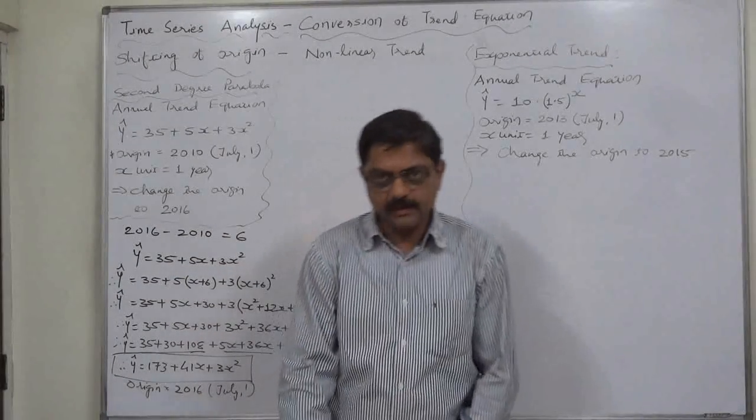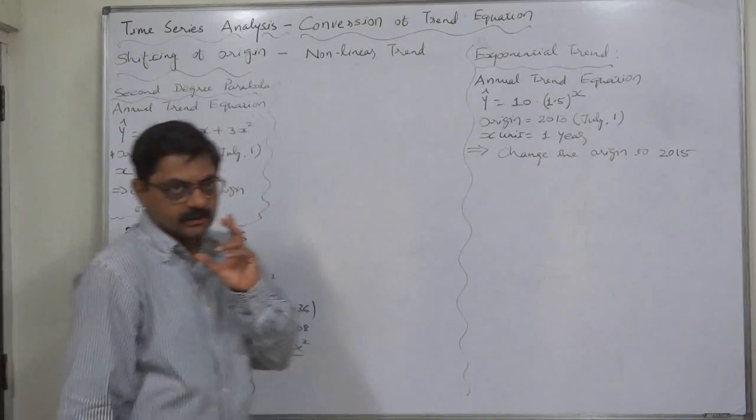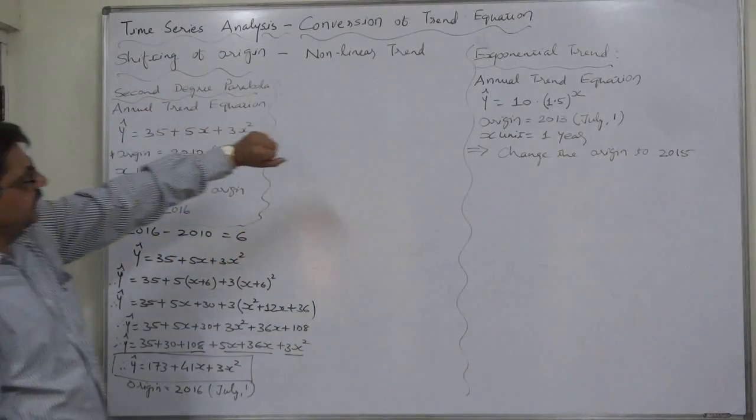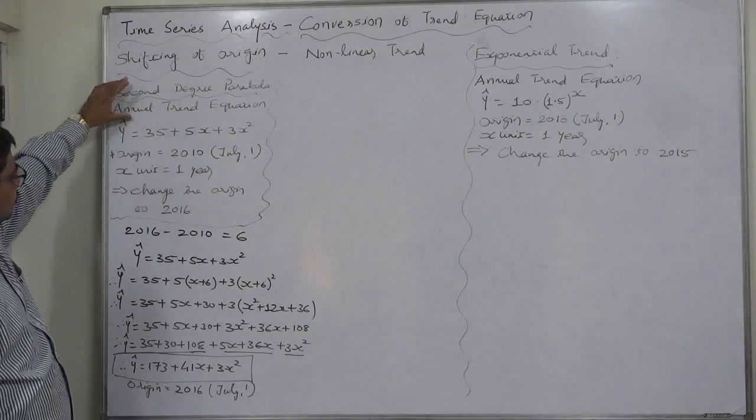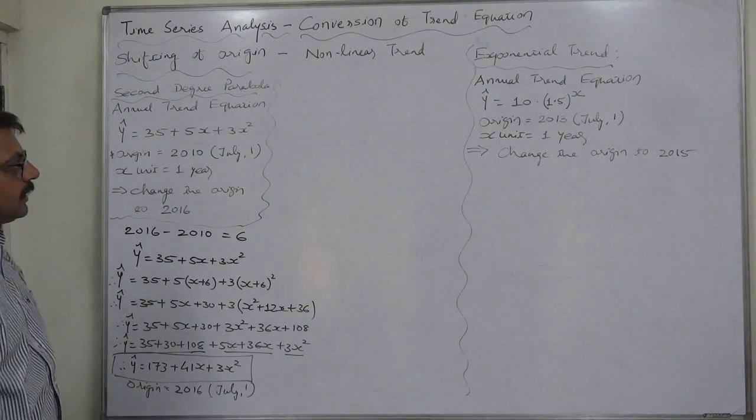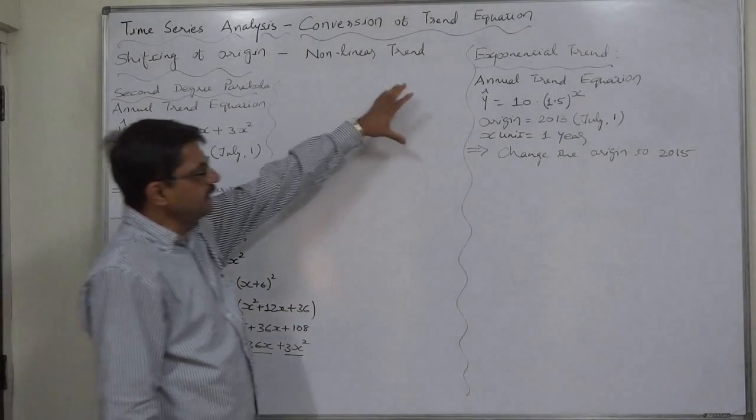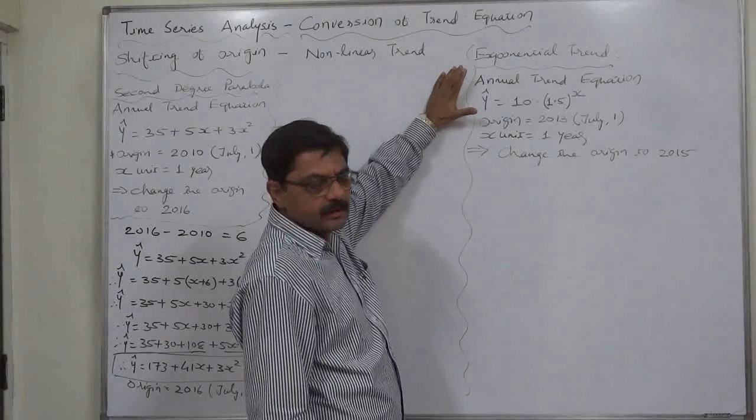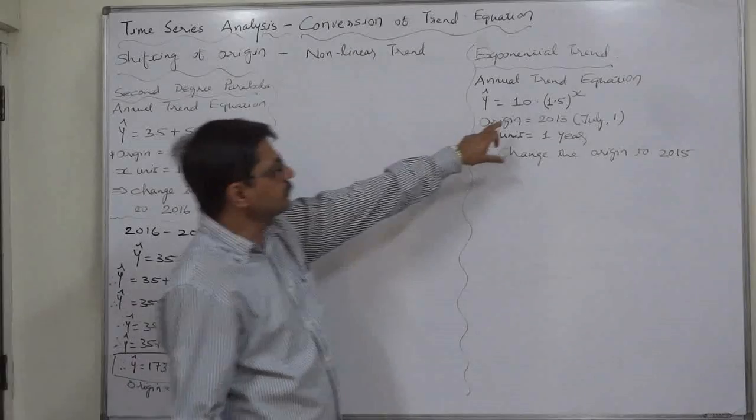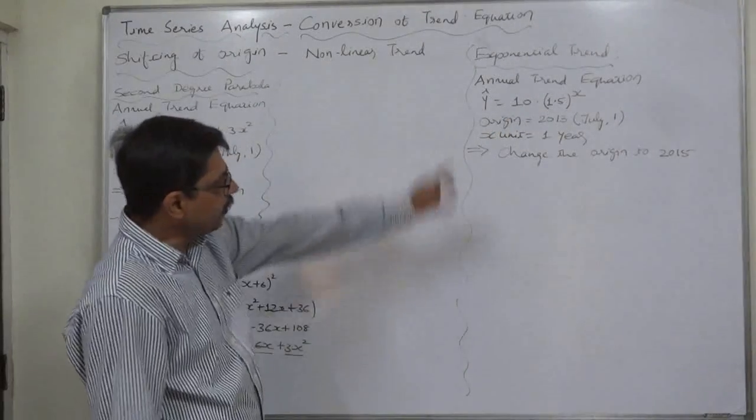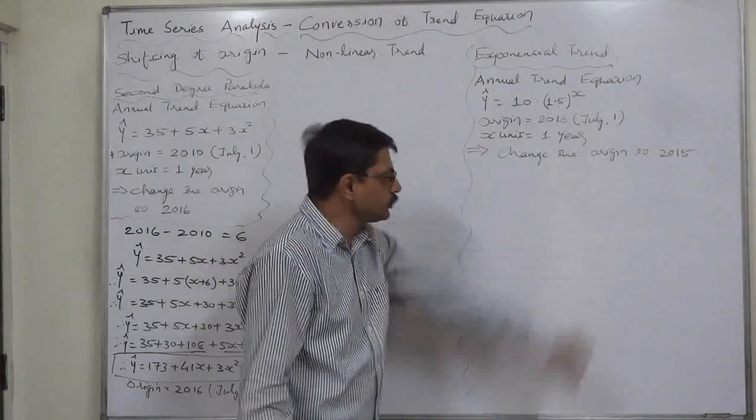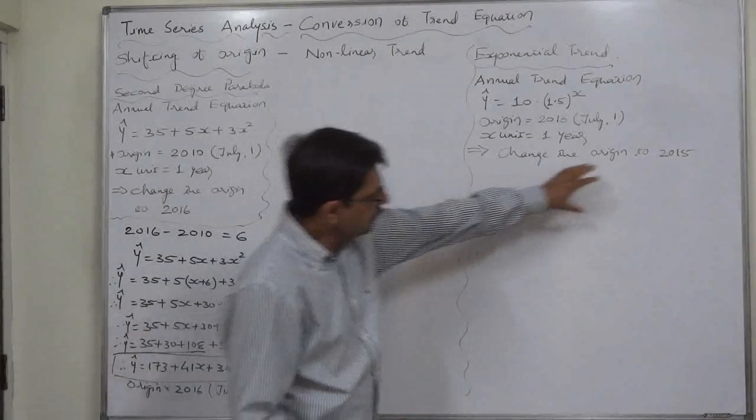Hello and welcome and namaskar. Shifting of origin in case of nonlinear trend. We have already discussed the case of second degree parabola, and now this is the case of exponential trend. The annual trend given is y estimated equals to 10 into 1.5 raise to x, and the origin is 2013 July 1.